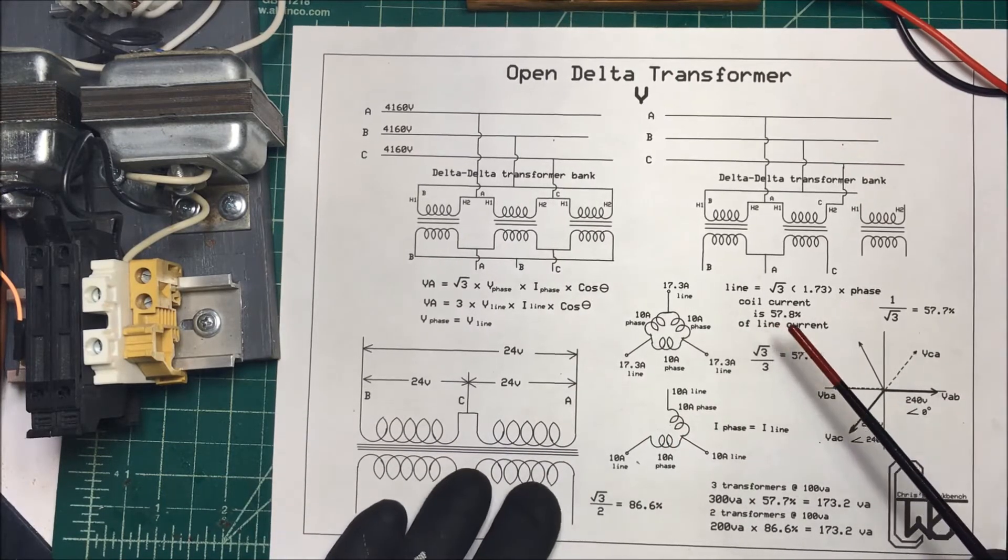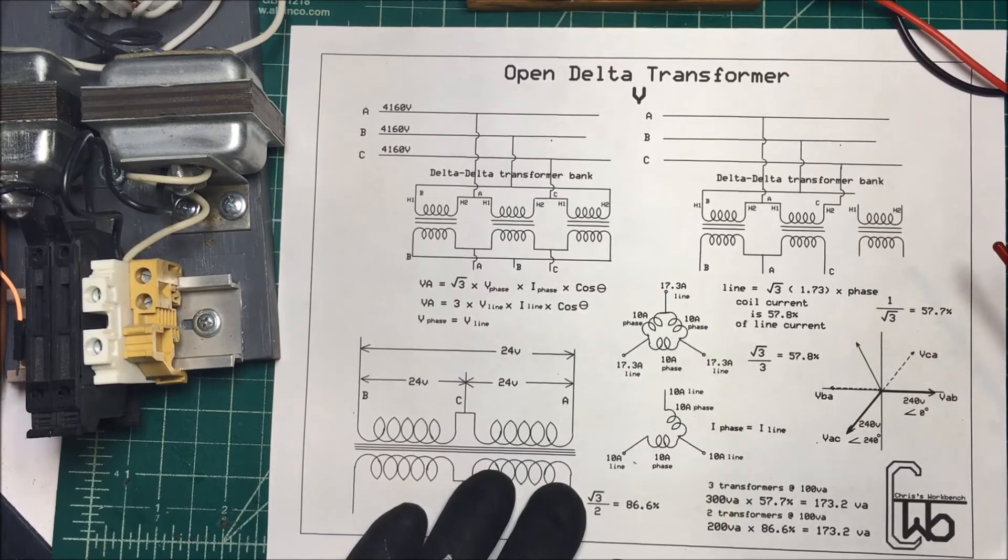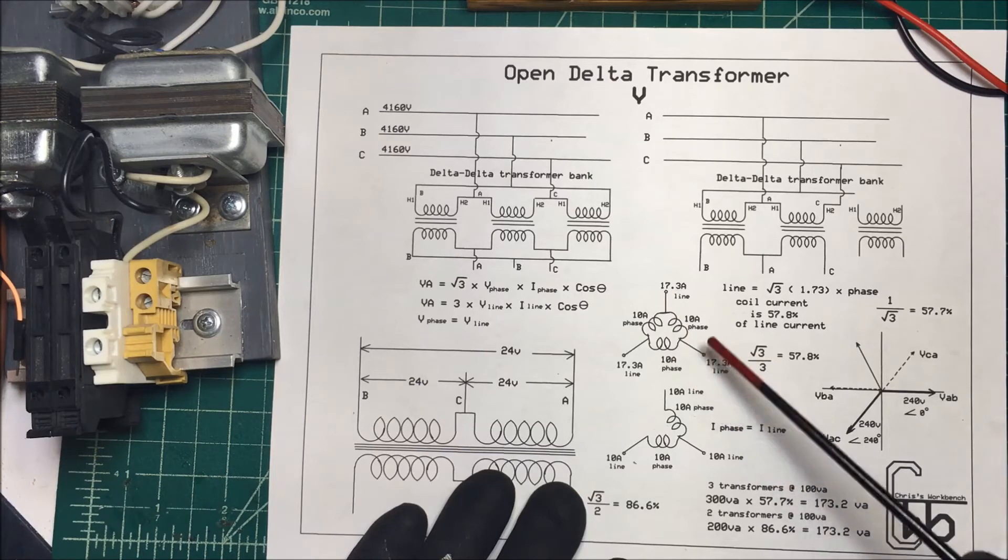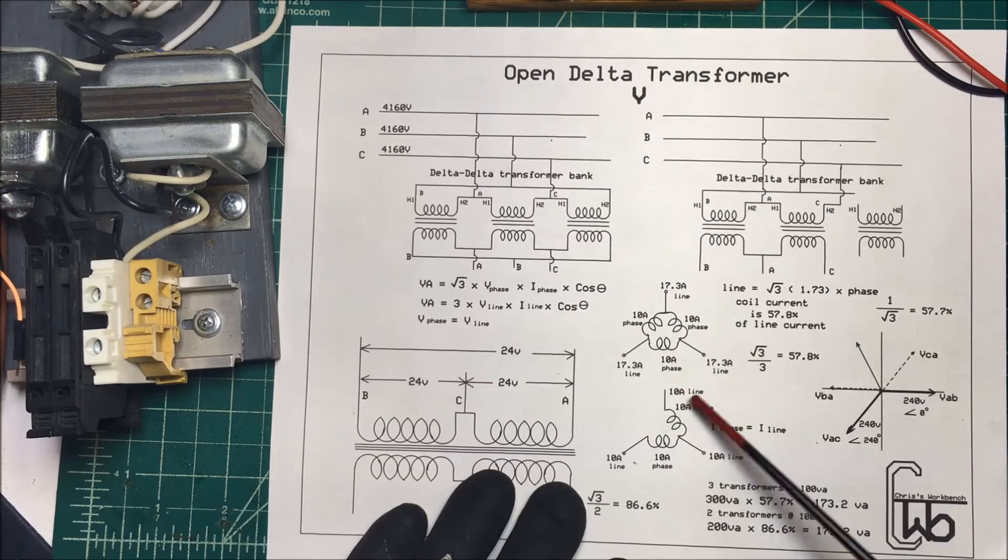And so we can still operate our three phase power off of this system like this. Now you would think by losing one of the transformers, the wattage would go down by a third, but it goes down by more than a third because we don't have our, instead of having our 10 amps here and our 17 amps up here, the line and the phase are the same.